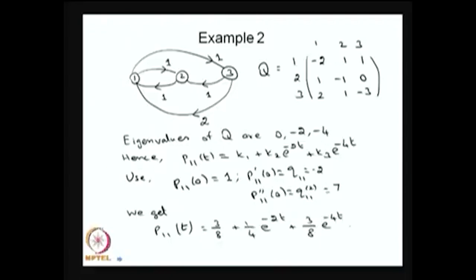This example has three states and this is a state transition diagram where the values represent the rates at which the system moves from one state to another. This is the difference between the state transition diagram of DTMC and CTMC. Some arcs are not present, meaning there is no way the system moves from state 2 to 1, or 2 to 3 in a small interval of time, whereas all other possibilities are given.